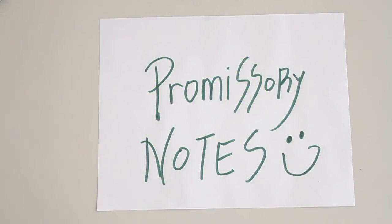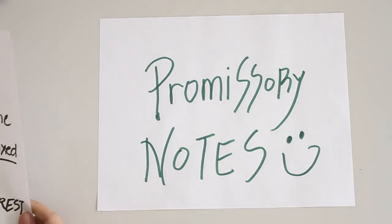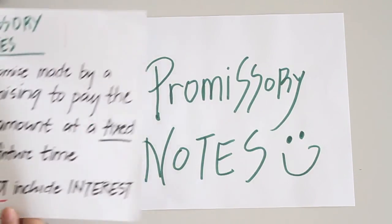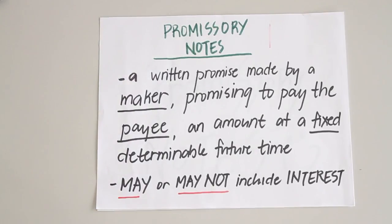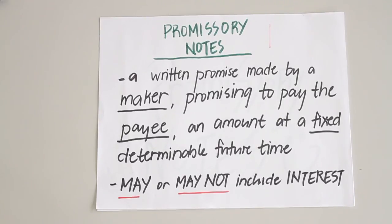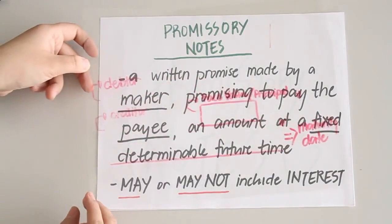Today we're going to be dealing with accounting for promissory notes. First, let's start with the basic definition. A promissory note is a written promise made by a maker promising to pay the payee an amount at a fixed determinable future time. It may or may not include interest.